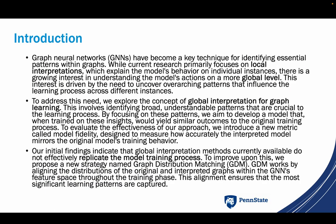Graph neural networks have become a key technique for identifying essential patterns within graphs. While current research primarily focuses on local interpretations, which explain the model's behavior on individual instances, there is a growing interest in understanding the model's behavior on a more global level. This interest is driven by the need to uncover overarching patterns that influence the learning process across different instances. To address this need, we explore the concept of global interpretation for graph learning.